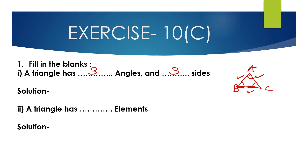Second bit: a triangle has dash elements. The elements are the sides and the angles — 3 sides and 3 angles. So a triangle has 6 elements.